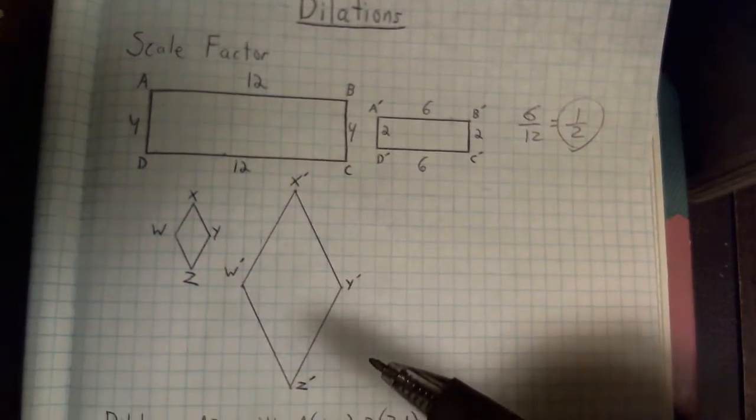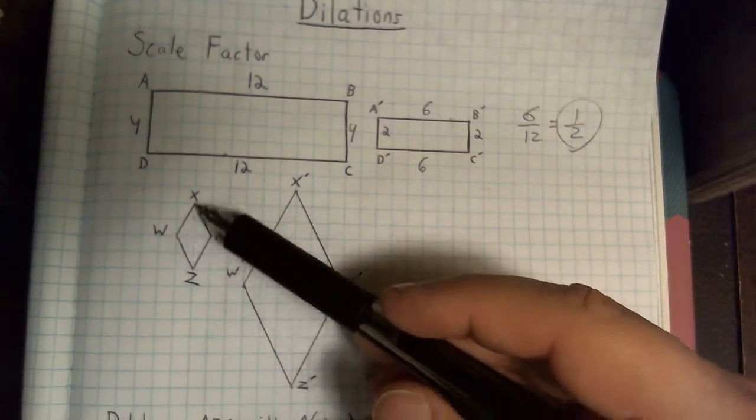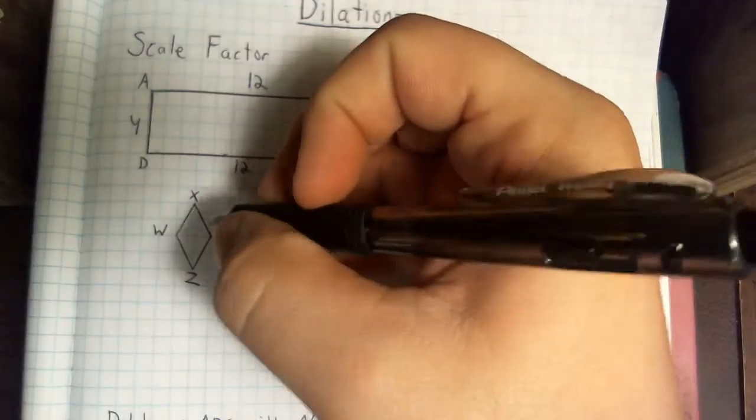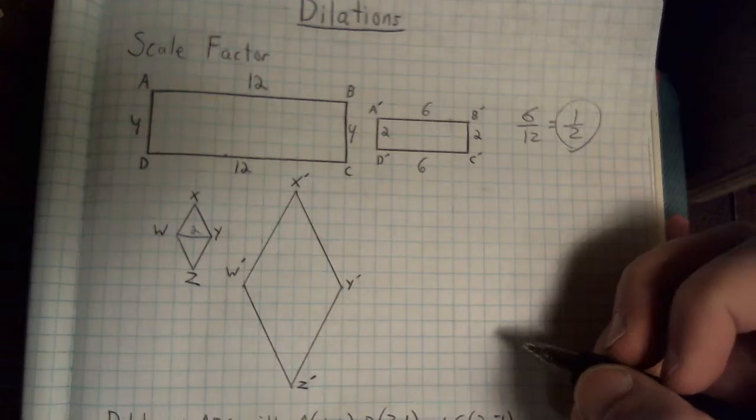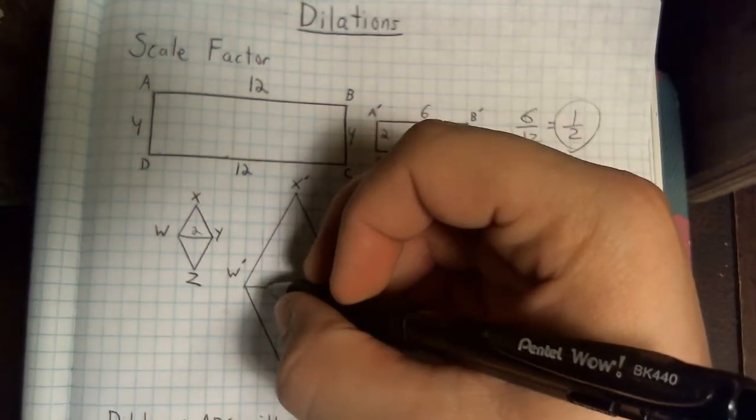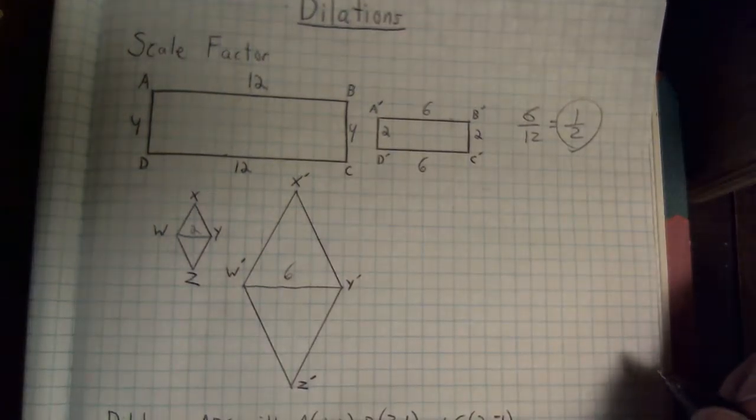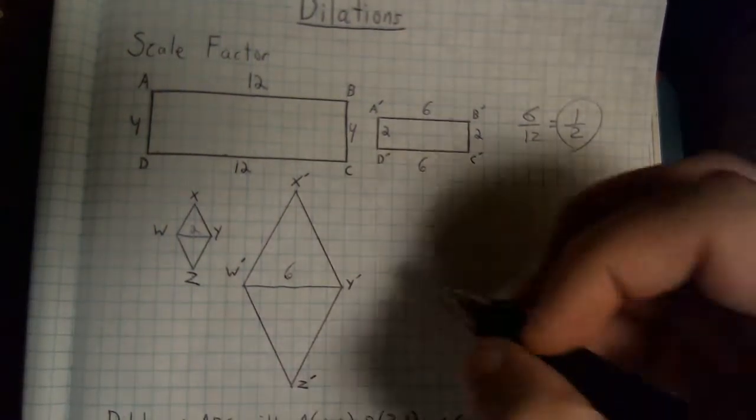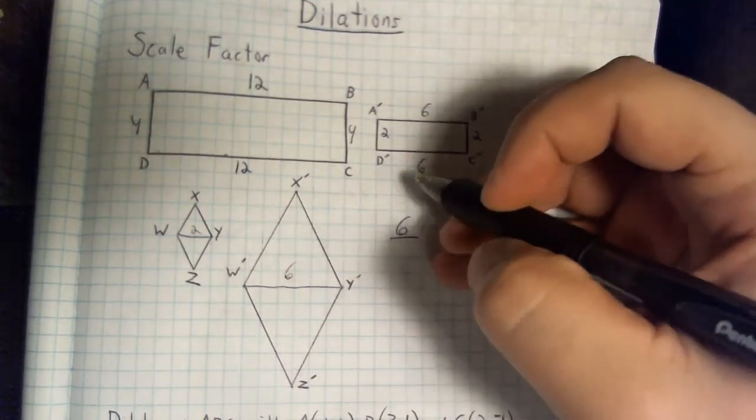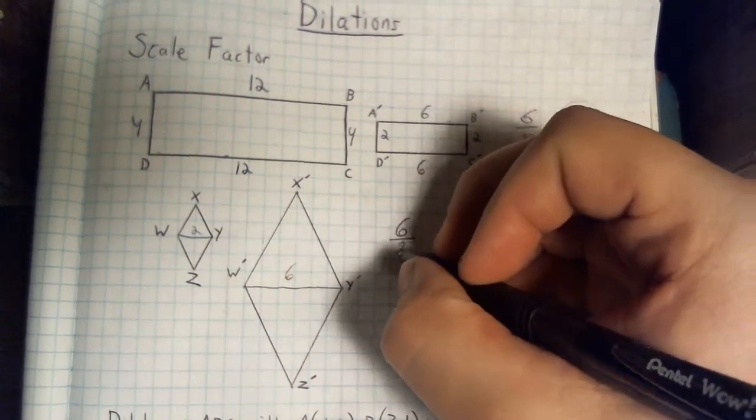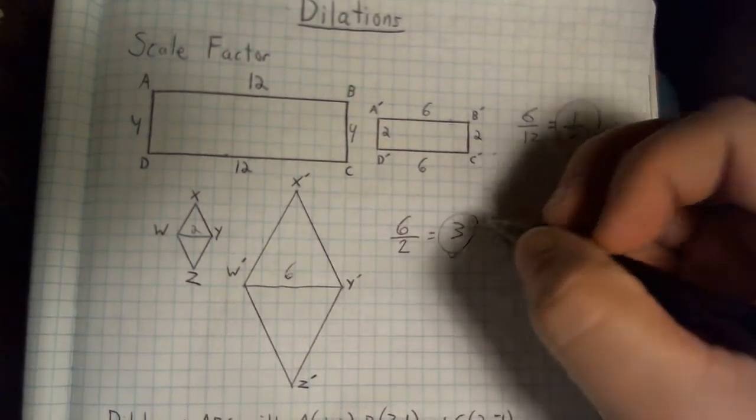If I check out this next object, it's kind of tough to count these diagonal units, but I can probably check and see how far across this object is. This object starts off being 2 across, and if I check how far across it is here, I notice that it's 6 units across. So to find my scale factor, I'm going to take the length from my image and I'm going to divide it by the corresponding length from my pre-image, 6 divided by 2 gives me a scale factor of 3.